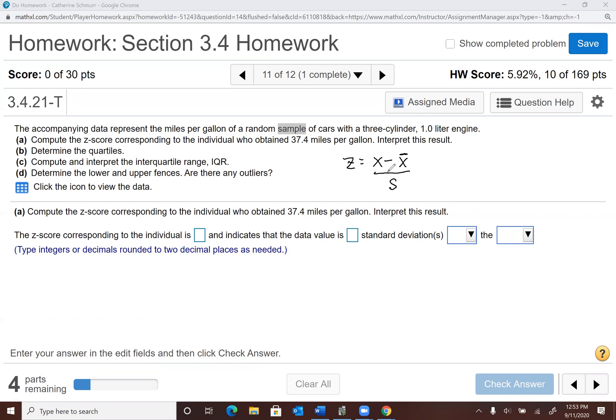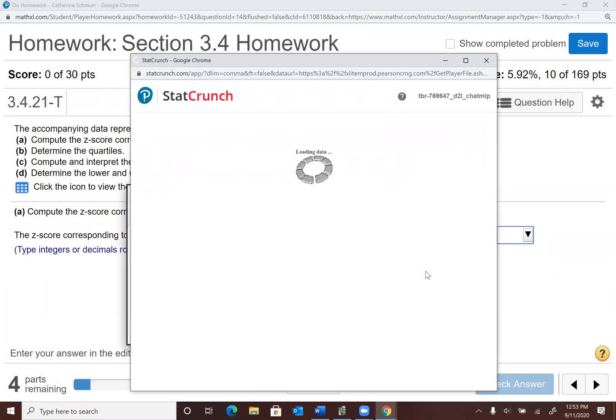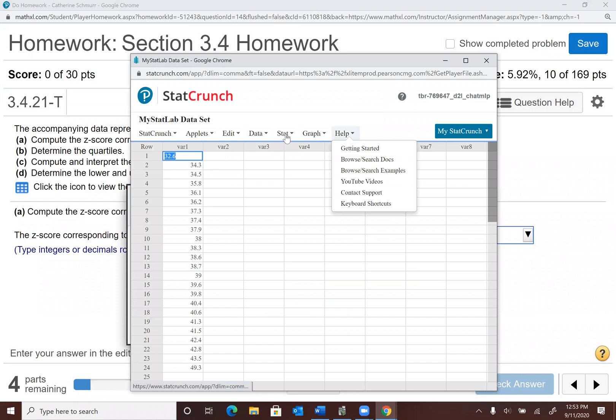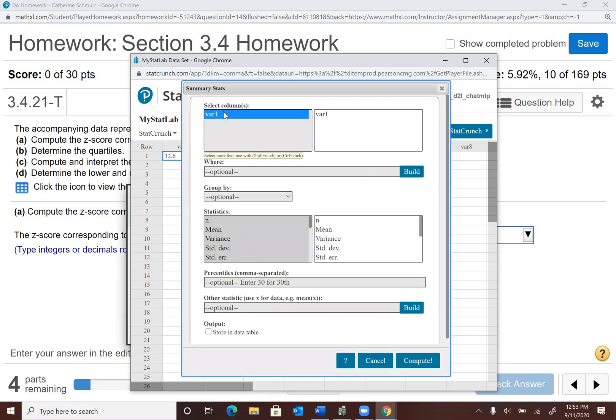So now what I need to do is I need to use StatCrunch in order to get the mean and standard deviation of the problem. So I'm going to go ahead and open up the data. I click on the double rectangle to open in StatCrunch. And I'm going to do my summary stats. So stat, summary stats, columns. Select that column, variable one.